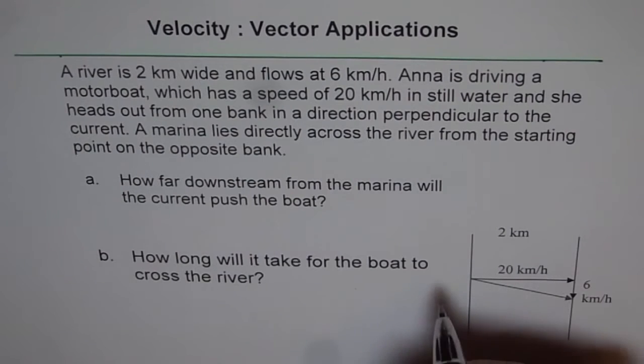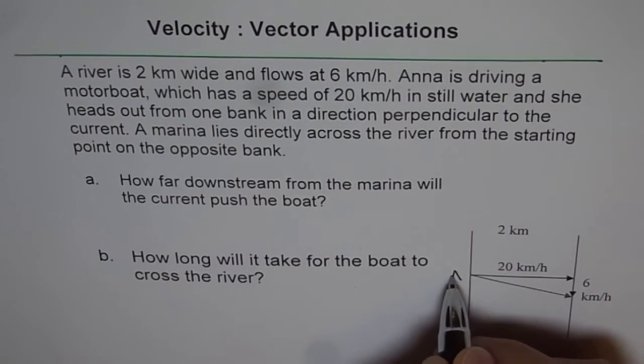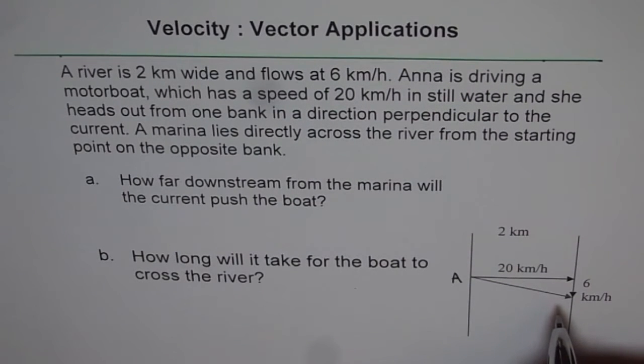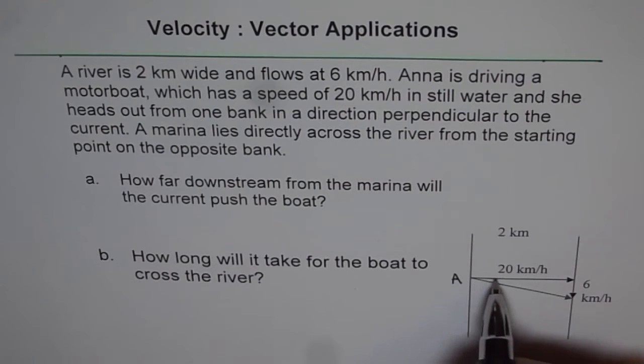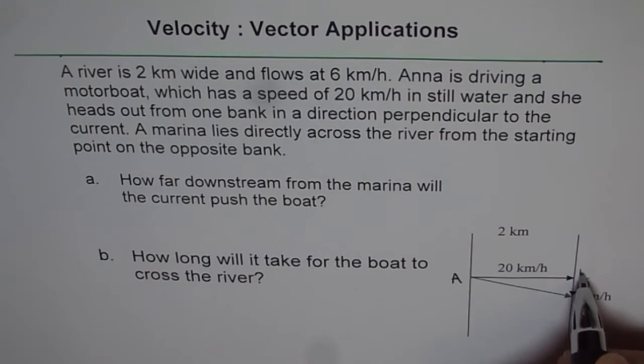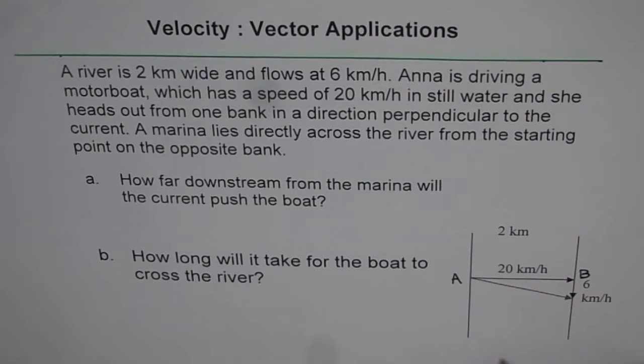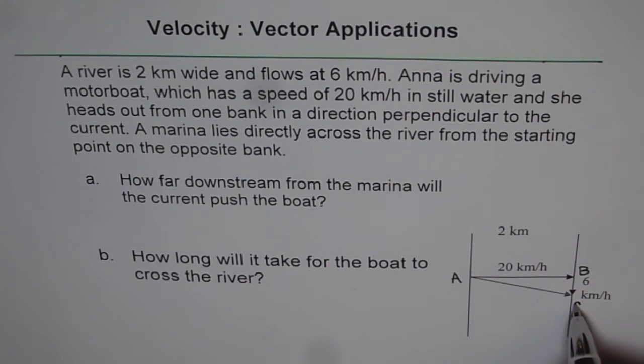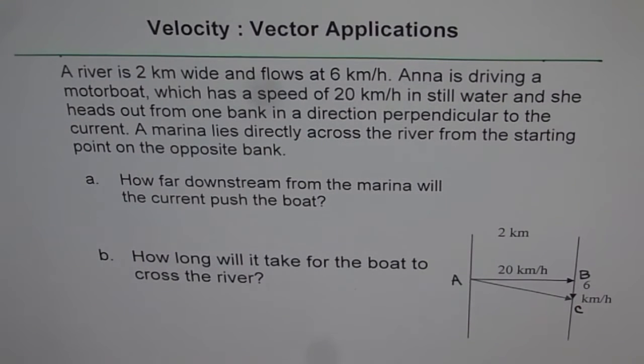So let's assume this is the point A from where Anna starts and she heads right across the river, and intends to go to point B. Since there is water current, it pushes her down and she lands at point C. So that is the current scenario.